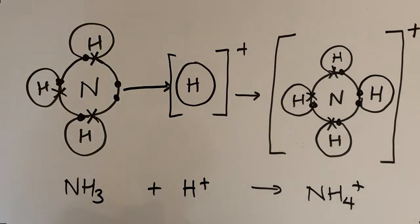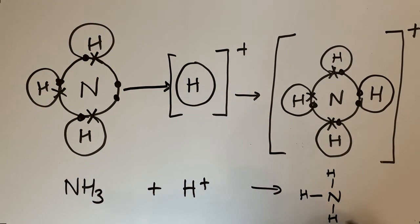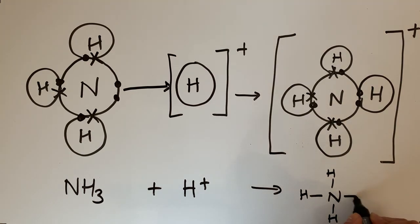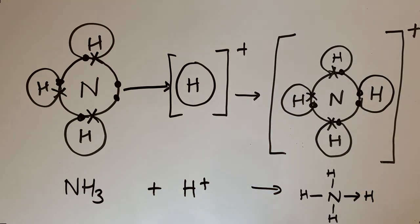In the displayed formula, we show the dative covalent bond with an arrow pointing from nitrogen to the hydrogen, indicating that both electrons in that bond were provided by the nitrogen. It's still a covalent bond — just showing that both electrons came from nitrogen.